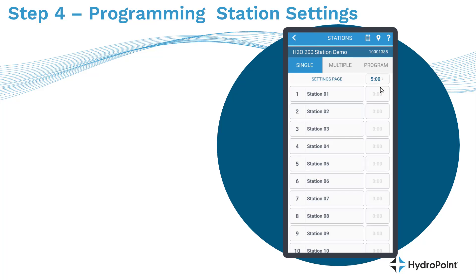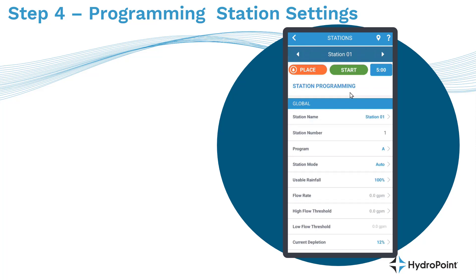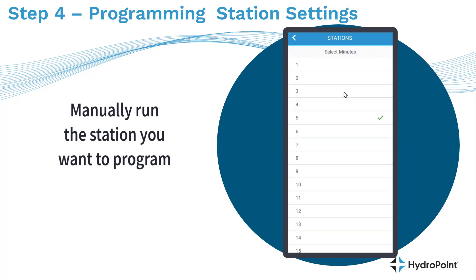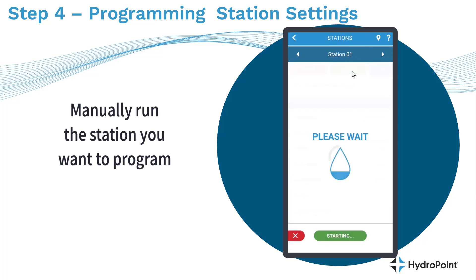As an installer, programming your station settings begins on the settings page for Station 1. Click the big button on the left of Station 1, and that takes you to the settings page for Station 1. The first thing to do is set the timer for the manual irrigation test needed for the programming process — set the default timer to the number of minutes you need to program a station. Once your default timer is set, hit Start and irrigation will begin.